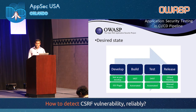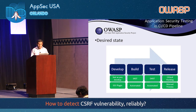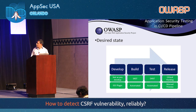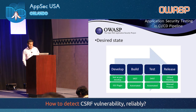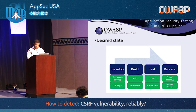The standard answer is to shift left, and that's what this slide shows. But at that time, we really didn't have much from the left. We did have some static analysis process going on, but besides that, there wasn't much else. We wanted to be in a state where we had some kind of testing going on at each phase of the application lifecycle.